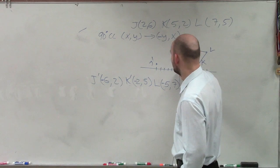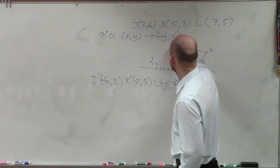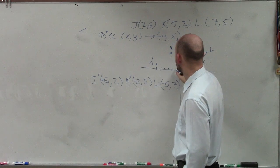I have negative 2, 5. Negative 2 up 1, 2, 3, 4, 5, which is K prime.